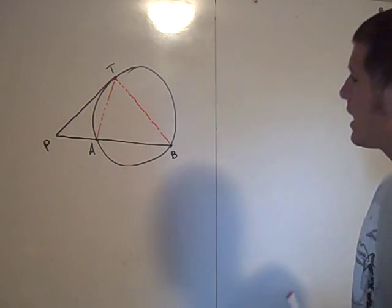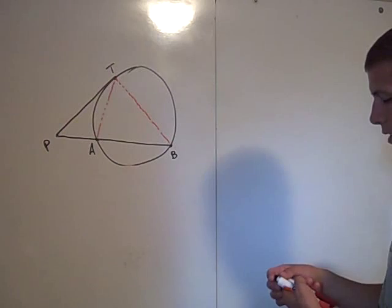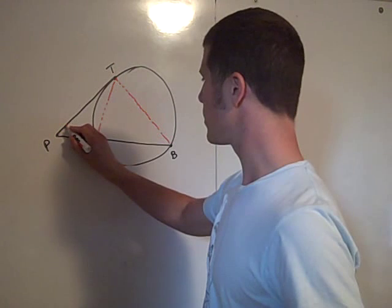So in this picture, there are two similar triangles. Where are they? Well, angle P is obviously congruent to itself.